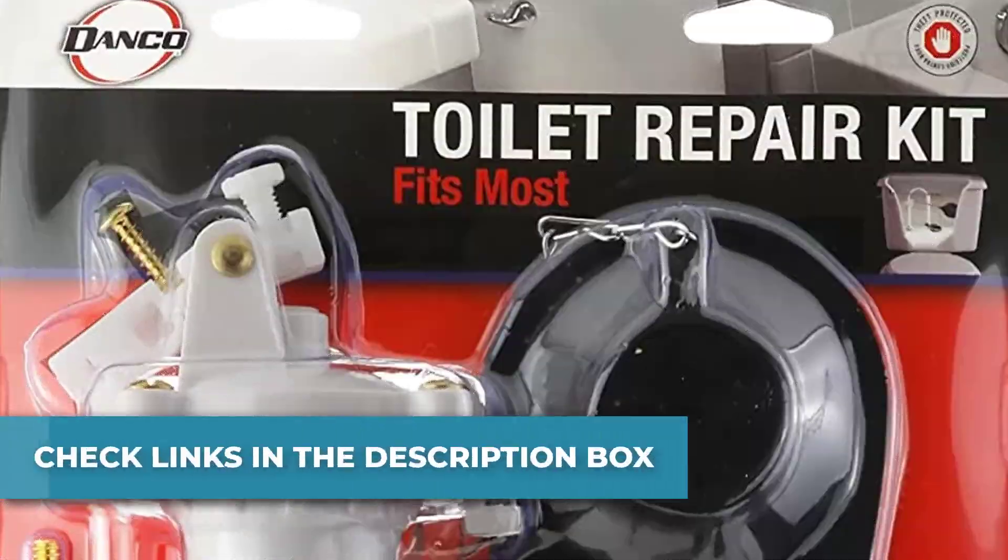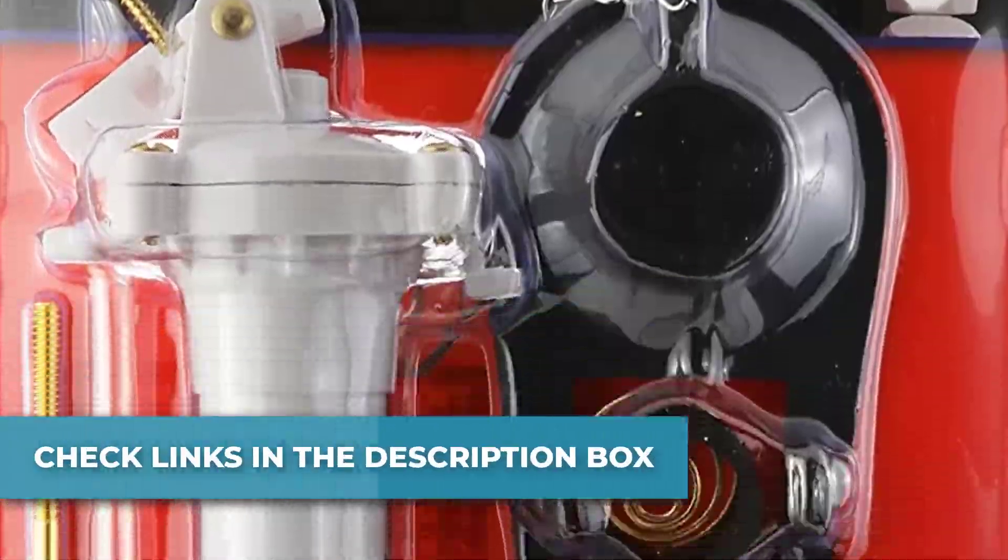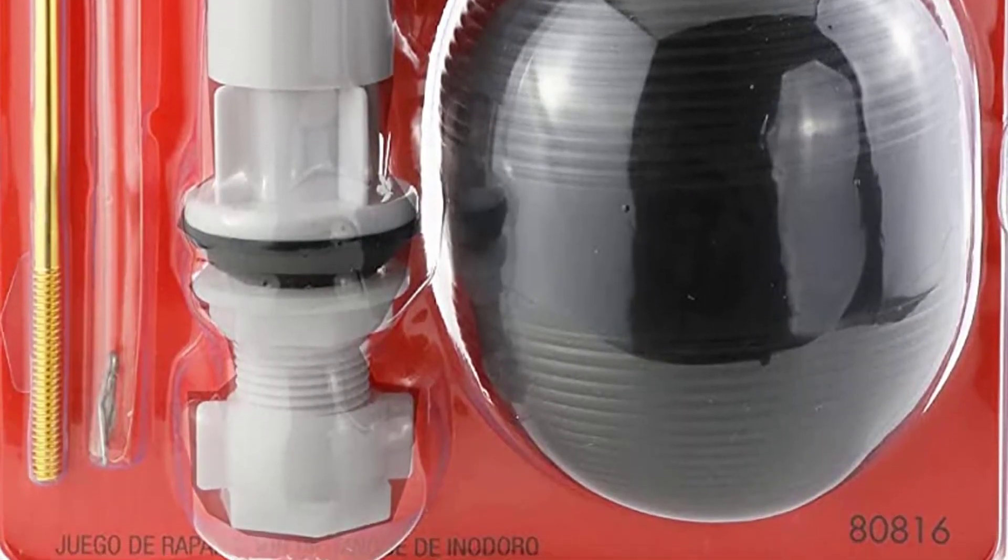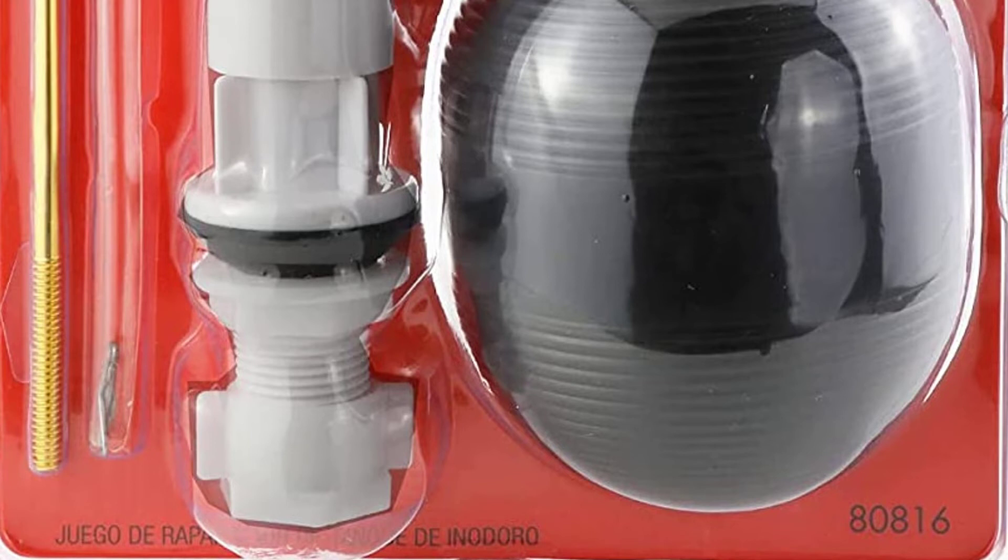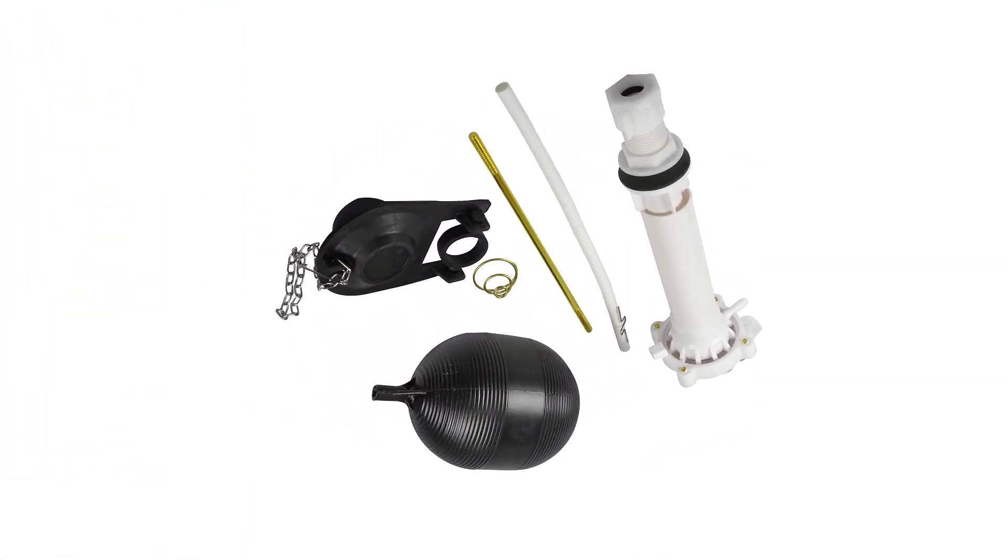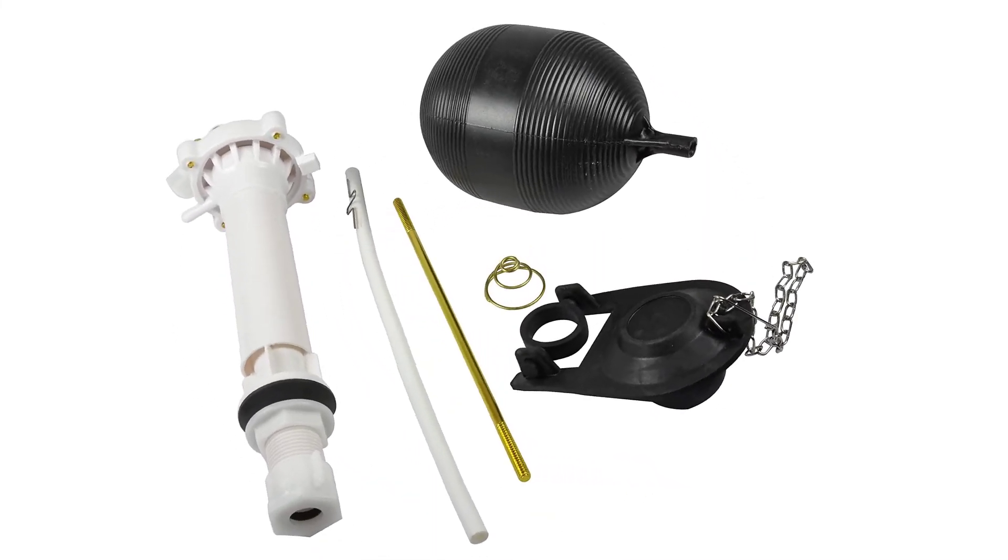The fill valve height is approximately 8.5 inches from the bottom of the tank. The length of the brass rod is 7.75 and the length of the float is 5.5. When the brass rod is threaded into both the float and threaded into the fill valve, the total length of the rod and float ends up being about 11.75.